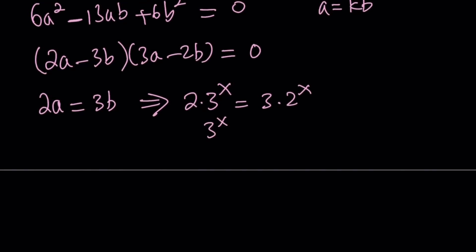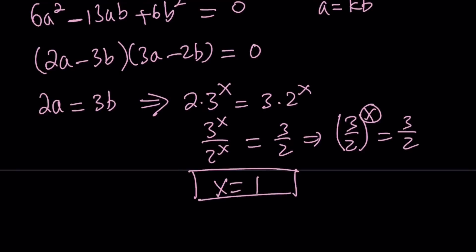But is that the only solution? Let's put it in a nicer form. I can divide both sides by 2 to the x and 2. Then I can put it in this form. From here, I can write it as 3 to the power 3 halves to the power x equals 3 halves. And from here, I can safely say that x equals 1 is the only solution, because this is an increasing function, it's exponential, and it's only going to intersect the horizontal line at one point. So x equals 1 is the only solution that comes from here. Of course, we're going to plug it in and check at the end. But let's look at the other case.